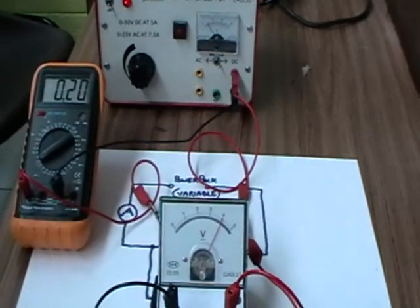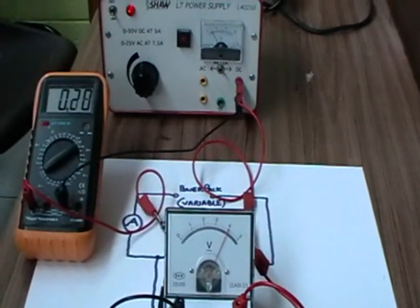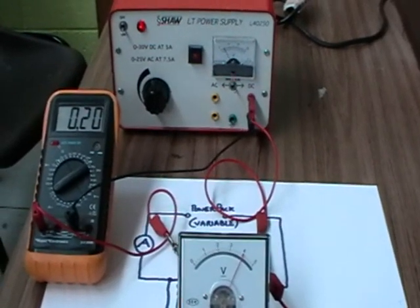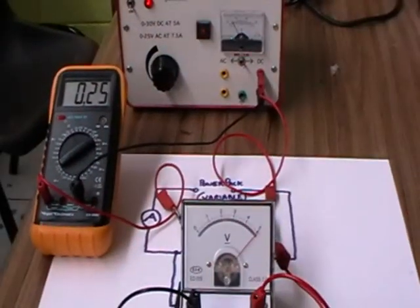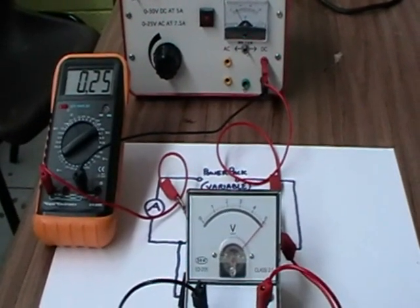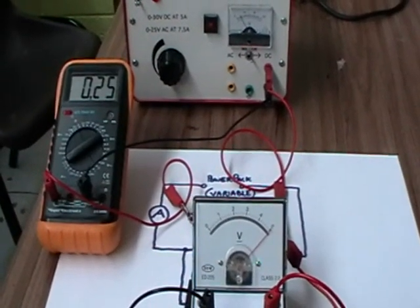Potential difference four volts, current 0.20 amperes. Potential difference five volts, current 0.25 amperes.